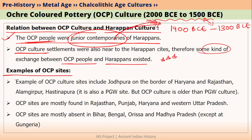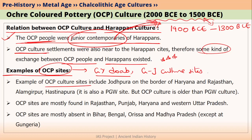Let's talk about some examples of OCP sites in India. OCP sites were mainly located in Ganga Yamuna Doab, and also in the region of Ganeshwar Jodhpura culture sites. We find OCP culture sites in Jodhpura, which is basically located on the border of Haryana and Rajasthan. Please note that this Jodhpura is not the Jodhpur city.